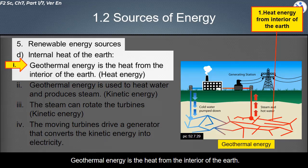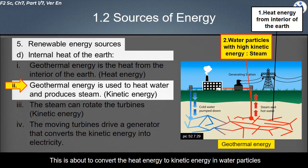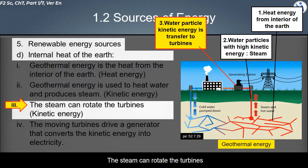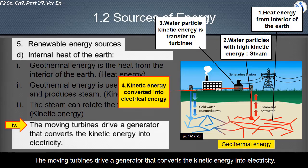Geothermal energy is the heat from the interior of the Earth. Geothermal energy is used to heat water and produce steam — this converts heat energy into kinetic energy in water particles. The steam rotates the turbines, transferring kinetic energy from water particles to the turbines. The moving turbines drive a generator that converts the kinetic energy into electricity.